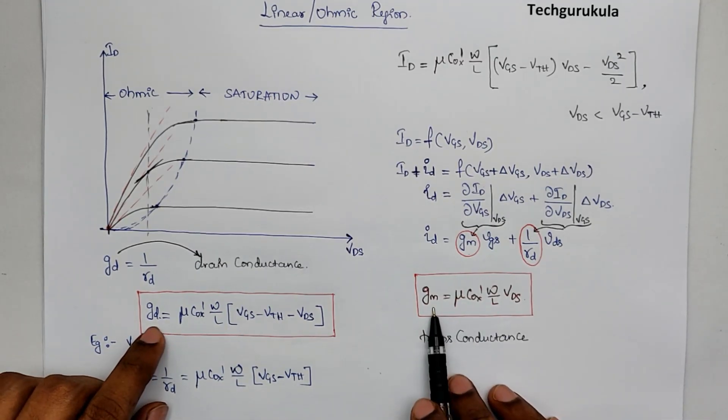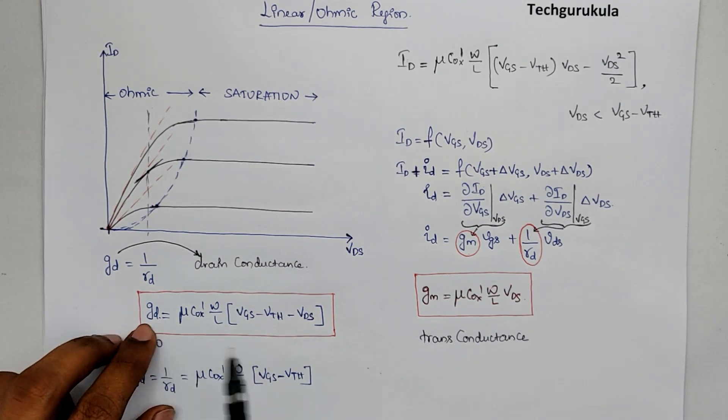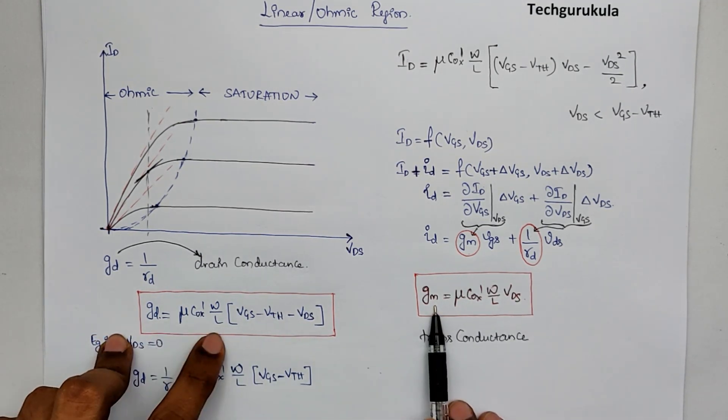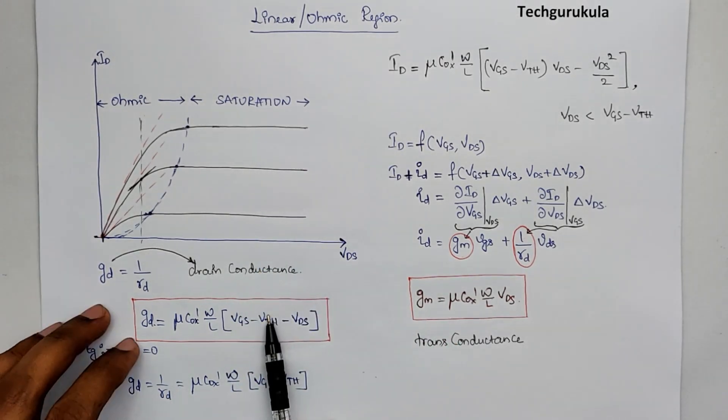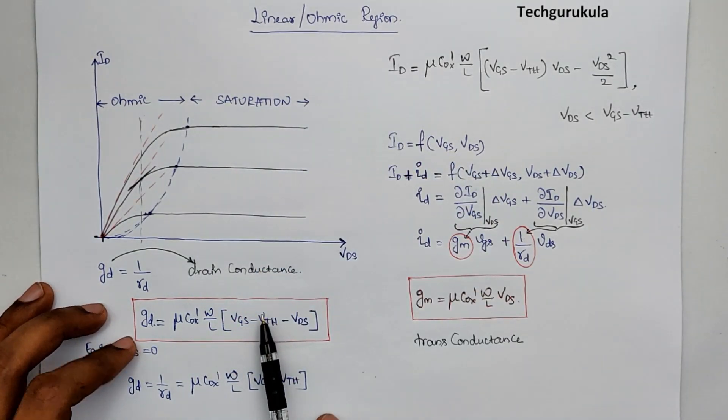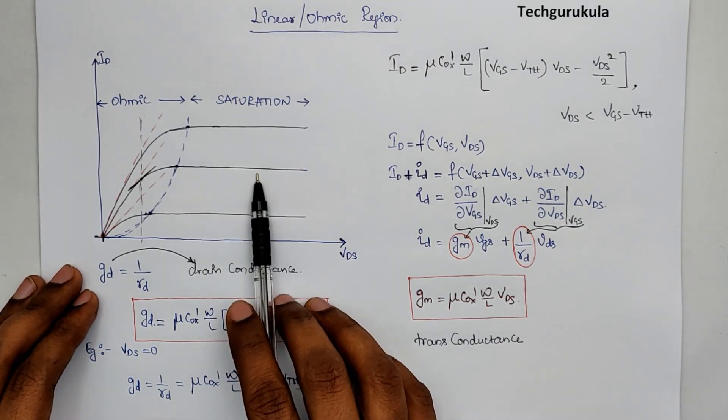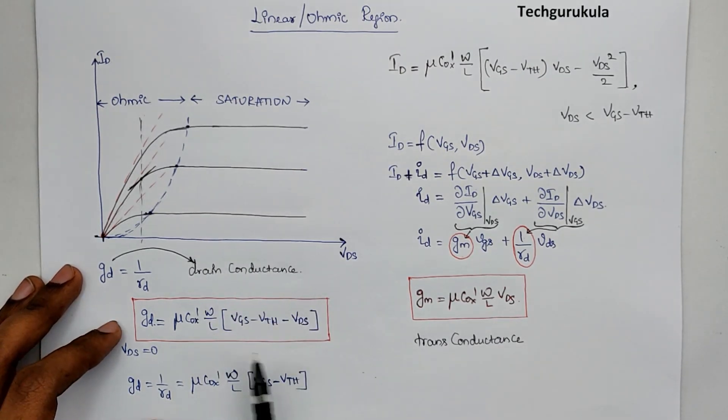These two are small signal drain conductance and transconductance values or expressions. In fact, one of the most important points in linear or ohmic region is the usage of MOSFET as a voltage variable resistor.